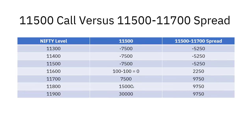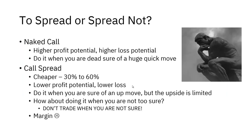So the 11,500–11,700 spread has higher profit potential but also costs more — that's the classic no-risk, no-gain scenario. To put actual numbers on it: losses are in the range of 5,000–7,000 per lot, and profits are in the range of 10,000–30,000. The bigger point: a naked call gives you higher profit potential at higher loss potential — only do it when you're dead sure of a huge, quick move. Huge because you need to recover the premium; quick because theta decay costs you every single day you hold the call.